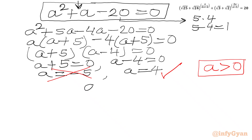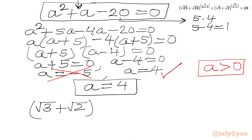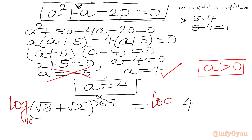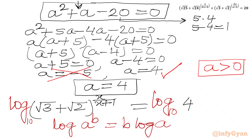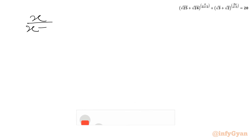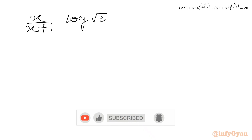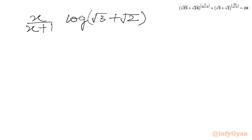Now a was our substitution: root 3 plus root 2, to the power x over x+1, equals 4. Now we will take log of both sides. So I will write log base 10 of root 3 plus root 2, to the power x over x+1, equals log 4. Using the log property log(a^b) = b·log(a), we get: x over x+1, times log(root 3 plus root 2), equals log 4.